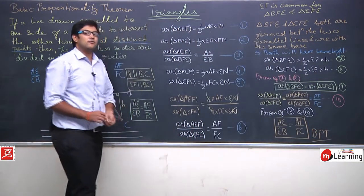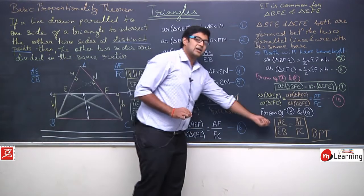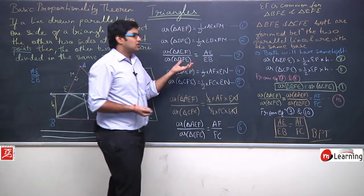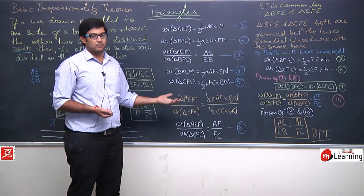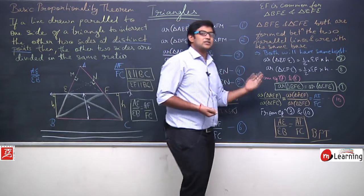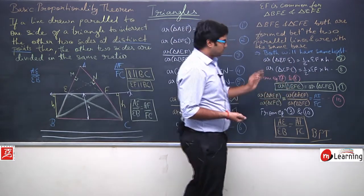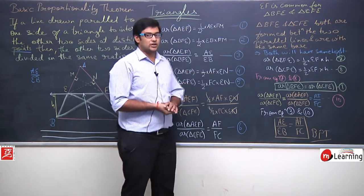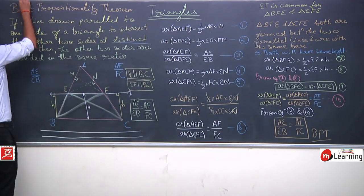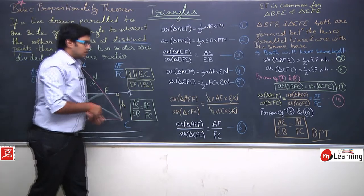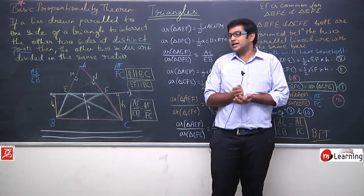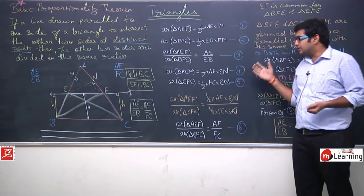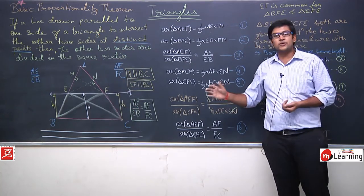This completes the Basic Proportionality Theorem. The derivation is long, but we have understood it step by step — the statement, the mathematical representation, and the proof. Please learn this theorem well. It is very very important for your exam. Write down this proof as it is. Thank you.